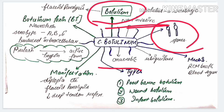Clostridium botulinum produces a toxin called botulinum toxin, which is responsible for the disease botulism. This toxin is a neurotoxin with serotypes A, B, and E. It is produced intracellularly by the bacteria in an inactive form called protoxin. Proteolytic enzymes such as trypsin can convert it into the active form.